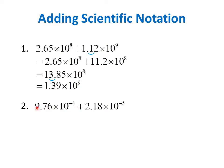How about if we have to add 9.76 times 10 to the negative 4 and 2.18 times 10 to the negative 5? They have different exponents, so we have to rewrite the number with the larger exponent. Which is larger, negative 4 or negative 5? Negative 4, because it is less negative. So we have to rewrite this first term.